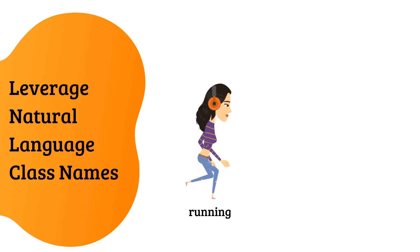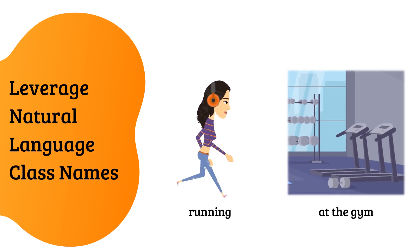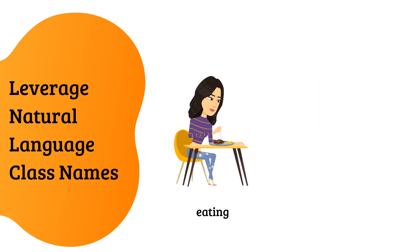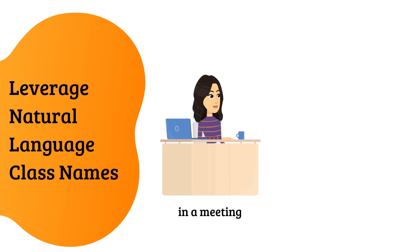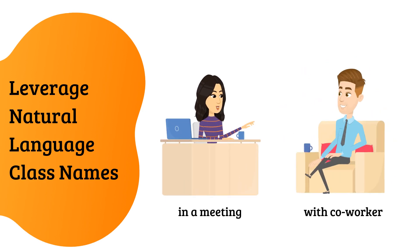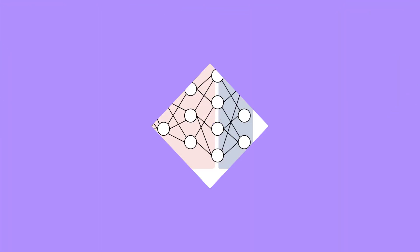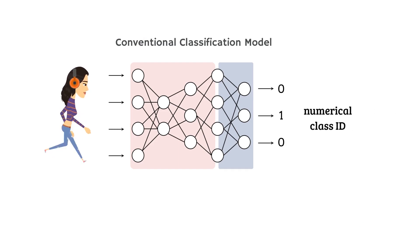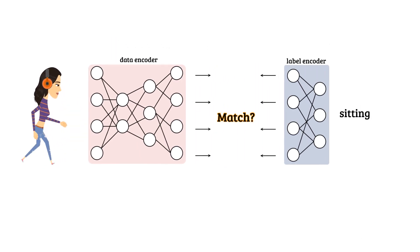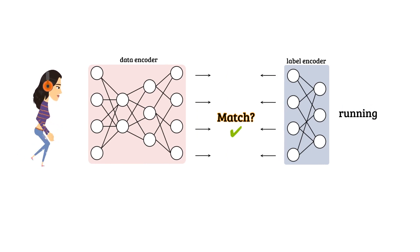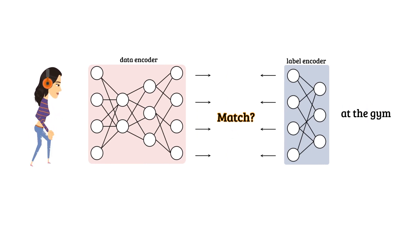We observe that the natural language class names carry valuable information for understanding label correlations. More importantly, they are typically safe to share. Therefore, we break the conventional classification model into a data encoder and a label encoder, and view classification as finding the best match between data and label representations.